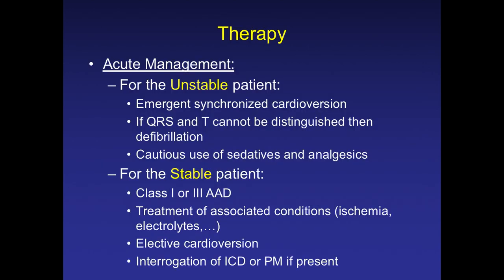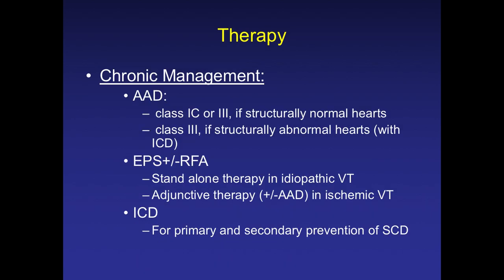AV dissociation and fusion beats are very important ECG criteria. For acute management: if the patient is unstable and you cannot distinguish the QRS from the T wave, always go for cardioversion — don't delay. If you can apply standard algorithms, that is ideal. If the patient is stable, you can use class I or class III antiarrhythmic drugs and treat the predisposing cause — ischemia, electrolytes. For chronic management, consider antiarrhythmic drugs, EP study, radiofrequency ablation, and ICD.